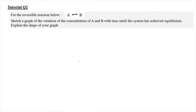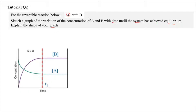For tutorial question 2, for the reversible reaction below — reactant A converted to product B — we need to sketch a variation of the concentration of A and B with time until the system has achieved equilibrium, and we need to explain the shape of the graph. In order to describe the variation in terms of graph, your graph needs to be looking something like this.